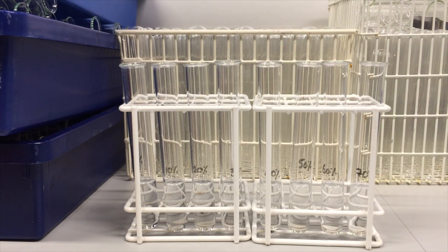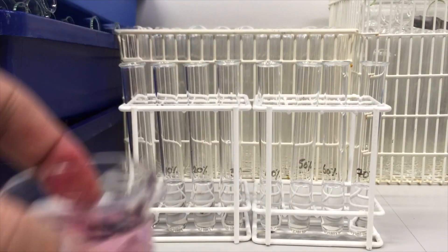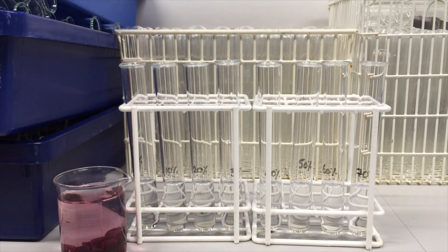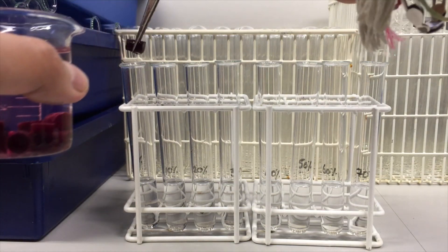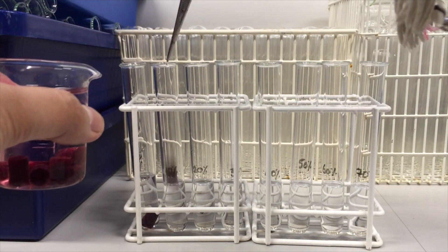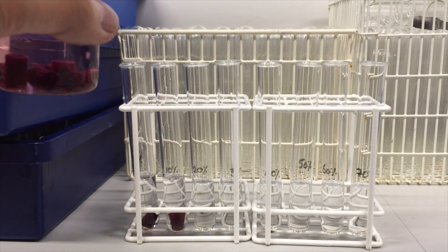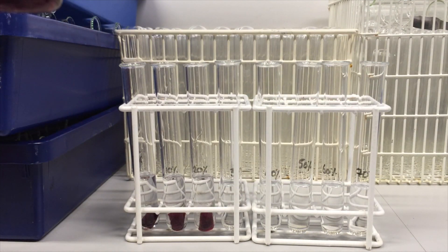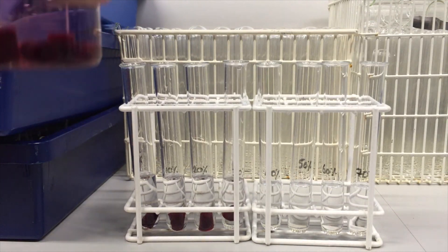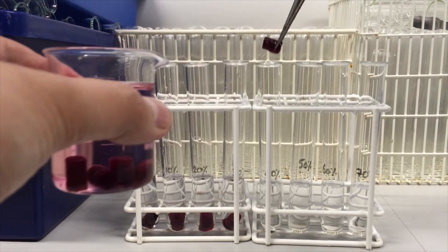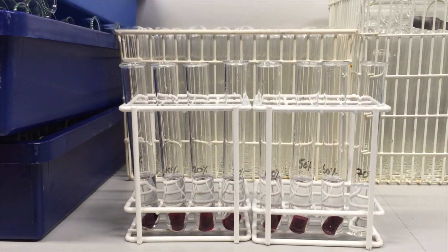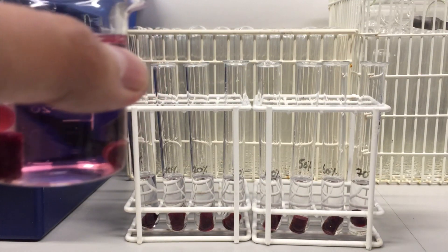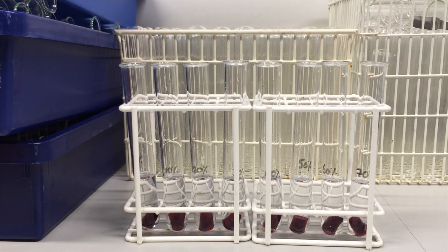So what I'm going to do now is to add my beetroot pieces into the different solutions of alcohol of varying strengths. Remember, we've just given it a quick rinse in water, so that there's no dye on the surface of the cells because we are making the assumption that any dye that comes into the water is due to the rupturing of cell membranes. So we need to get rid of that excess dye in the first place. And that's that, and we'll start a stop clock.